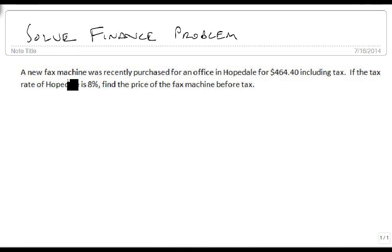A new fax machine was recently purchased for an office in Hopedale for $464.40, including tax. If the tax rate of Hopedale is 8%, find the price of the fax machine before taxes.